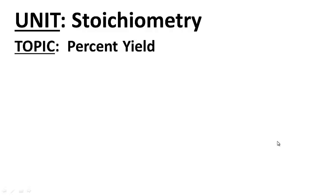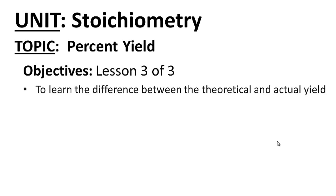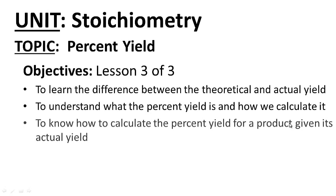Welcome back to our unit on stoichiometry. Today's topic is percent yield — Lesson 3 of 3. Your objectives are as follows: to learn the difference between the theoretical and actual yield, to understand what percent yield is and how we calculate it, and to know how to calculate the percent yield for a product given its actual yield.